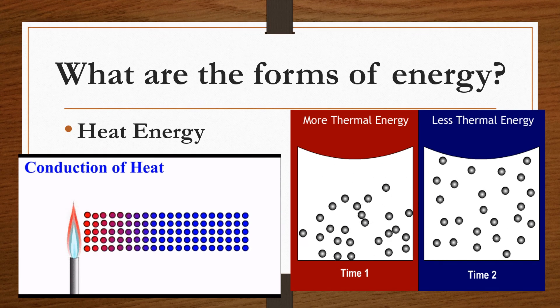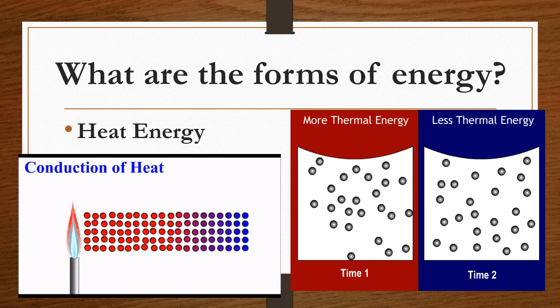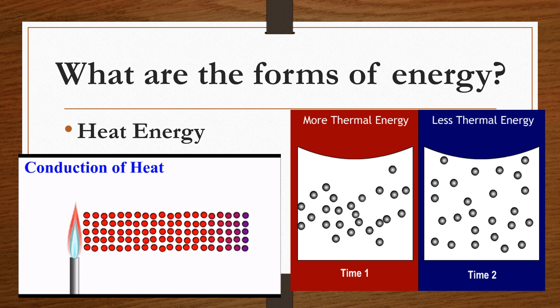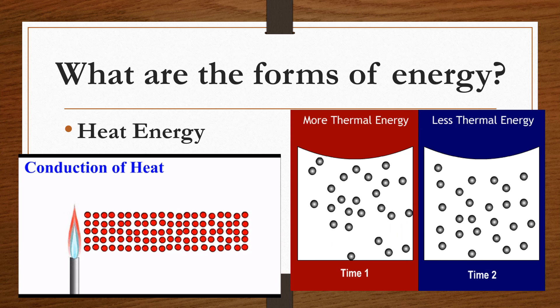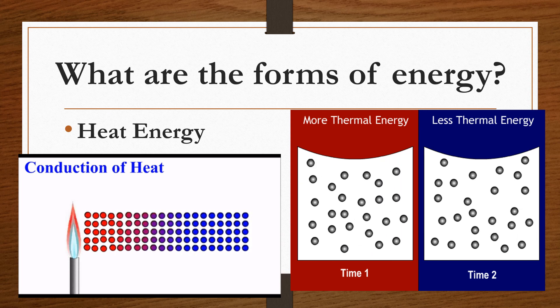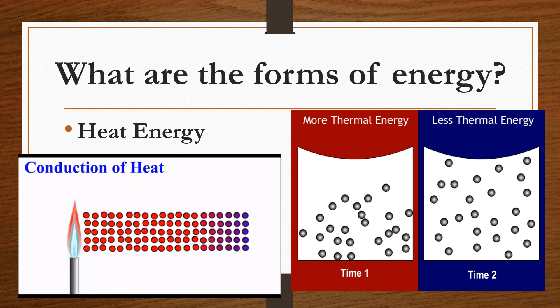Heat energy is energy that comes from the movement of particles in an object. It can be transferred in three ways: through conduction, convection, and radiation.